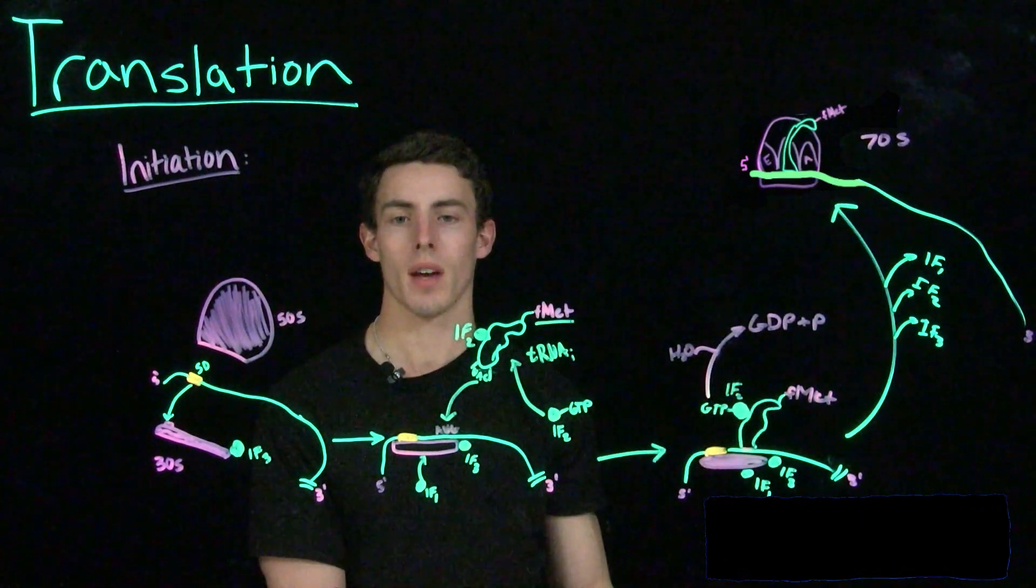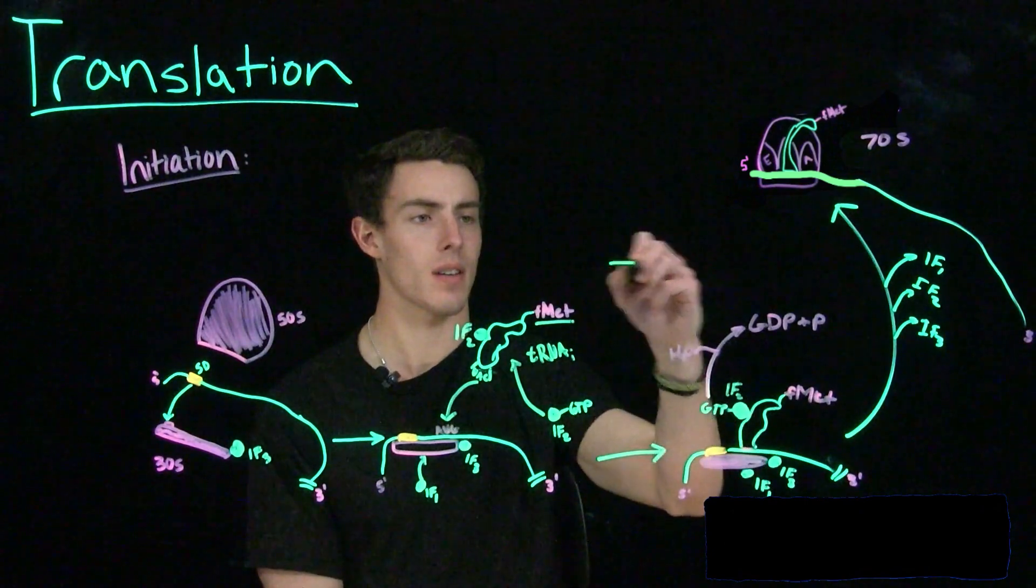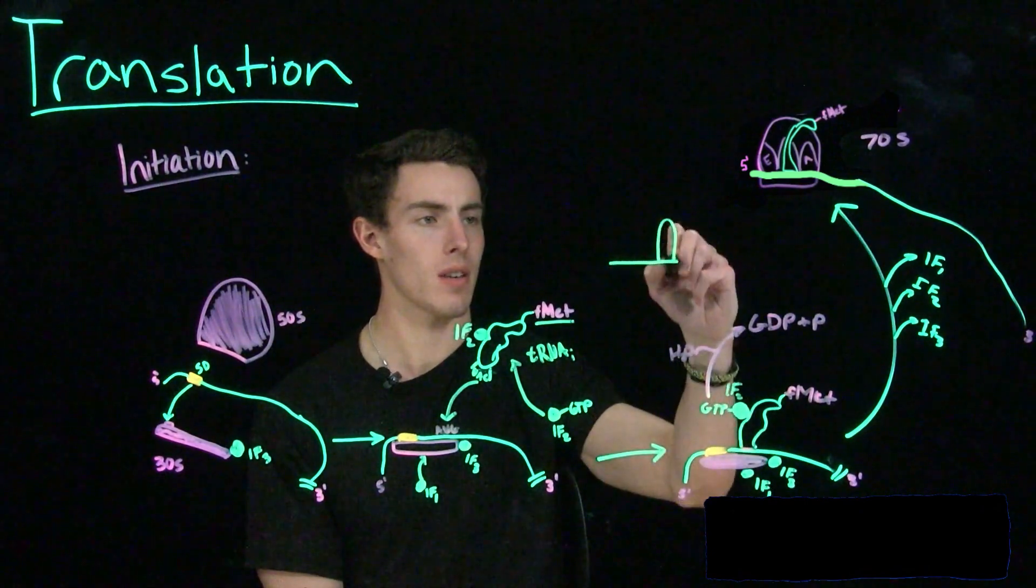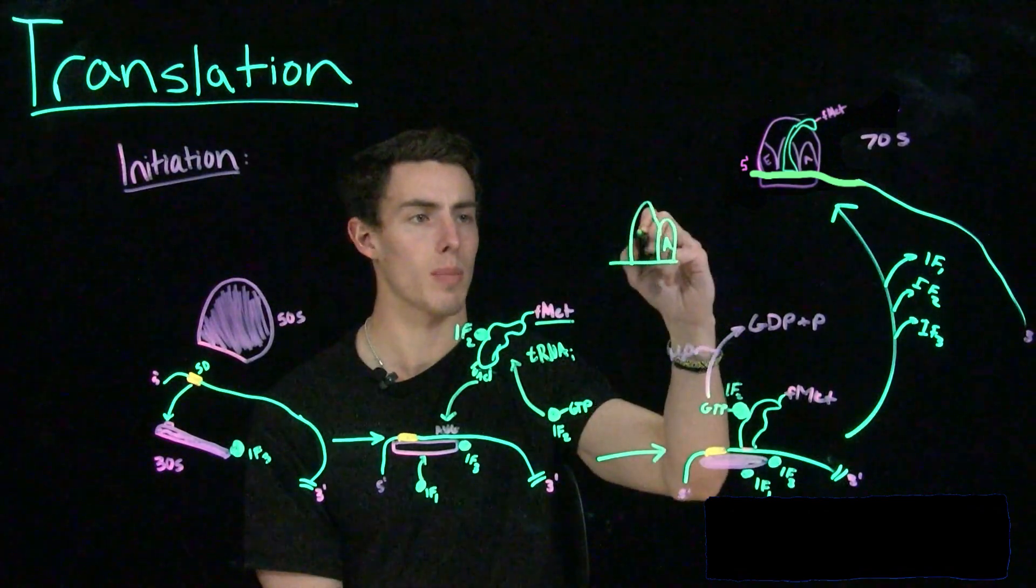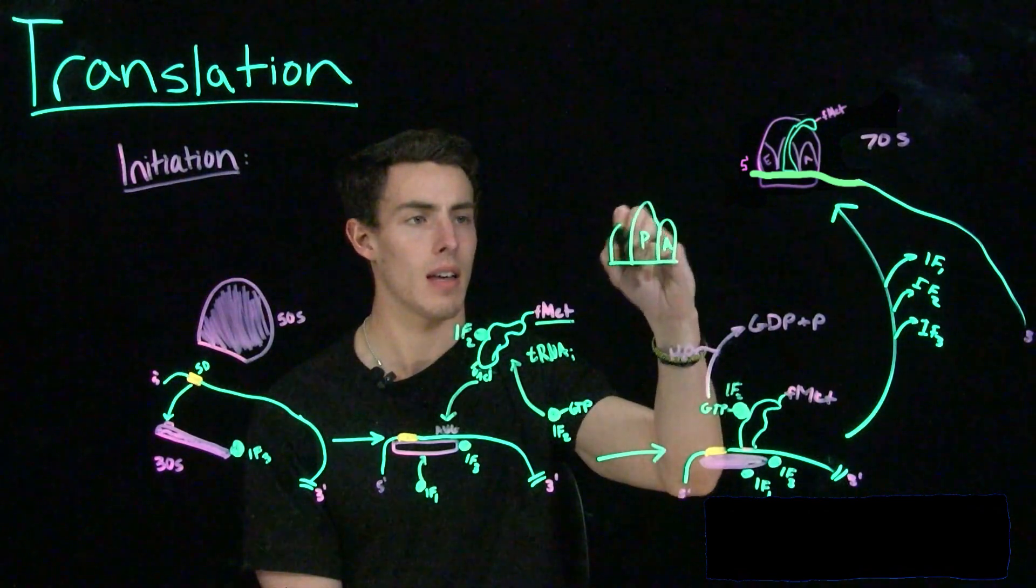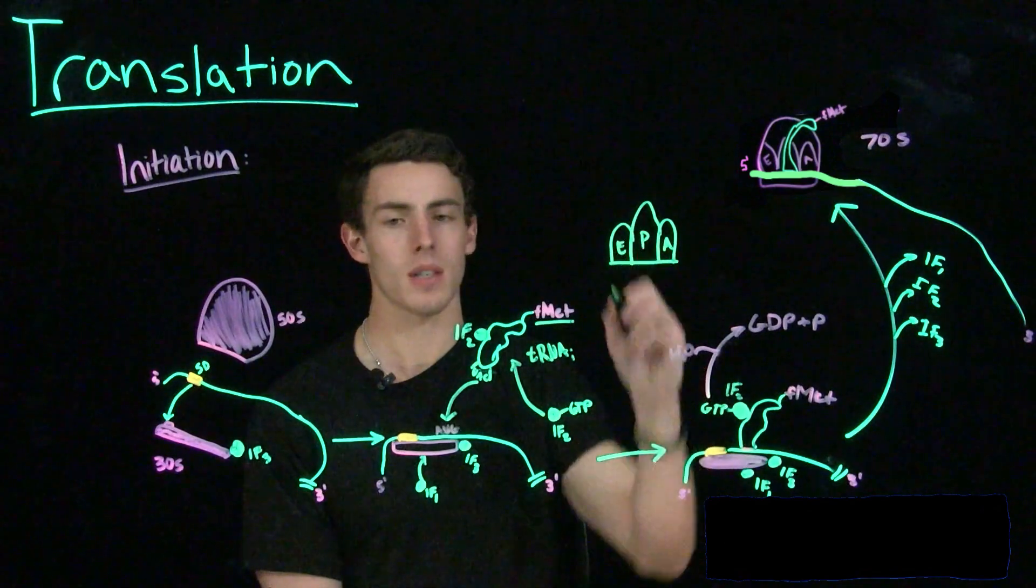If you remember from BIO1, a ribosome has three sites in it. The A site, the aminoacyl site, the P site, or the peptidyl site, and the E site, for the empty or exit site.